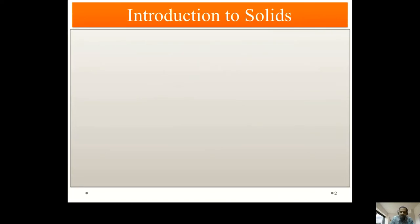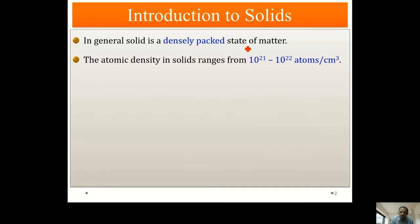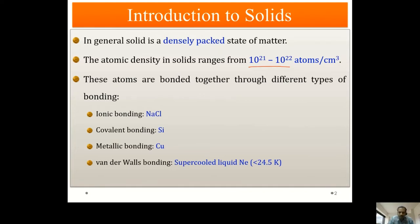By now we have some basic idea about solids. We know that a solid is a densely packed state of matter and the atomic density is typically of the order of 10^21 to 10^22 per centimeter cube. These atoms are held together inside the solid in terms of different types of bonds: ionic bonding, covalent bonding, metallic bonding, and in some rare cases van der Waals bonding.